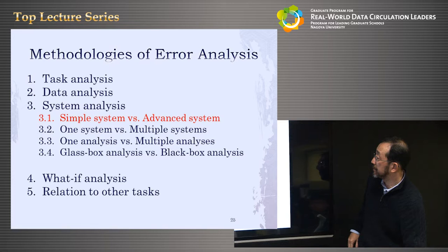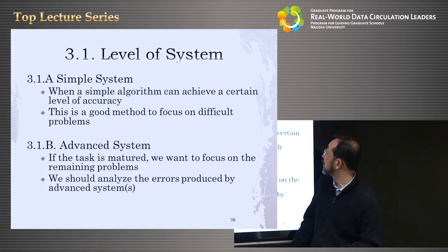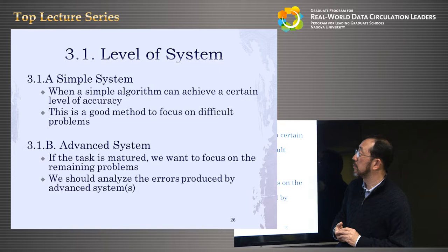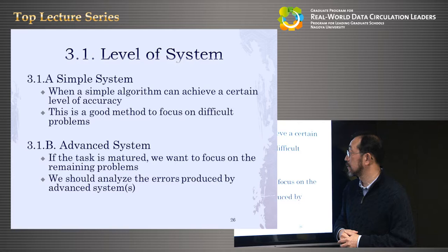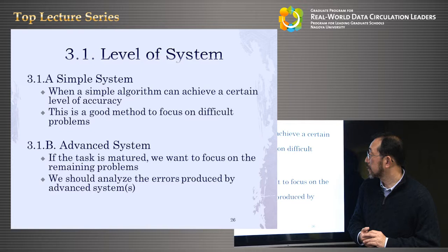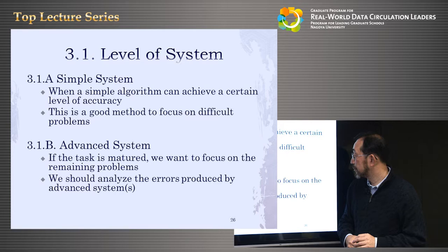The first axis is simple system versus advanced system. When a simple algorithm can achieve a certain level of accuracy — like named entity with a dictionary — this is a good method to focus on difficult problems and understand what is a difficult problem. Advanced systems are used when the task is mature and we want to focus on the remaining problems, analyzing errors produced by the advanced system.